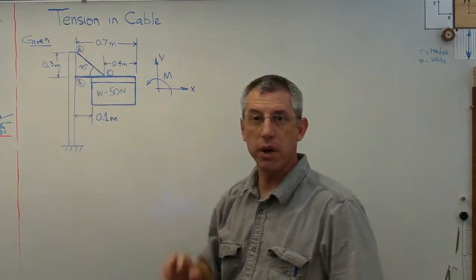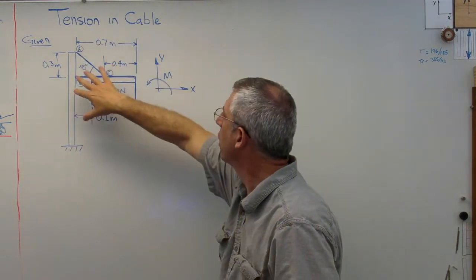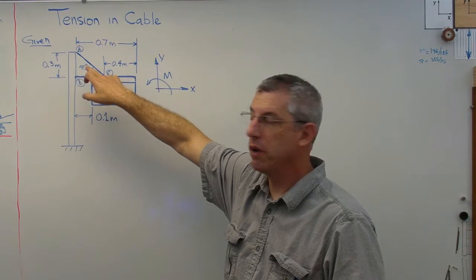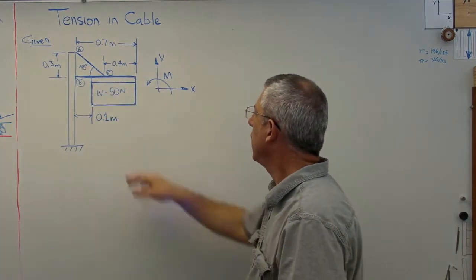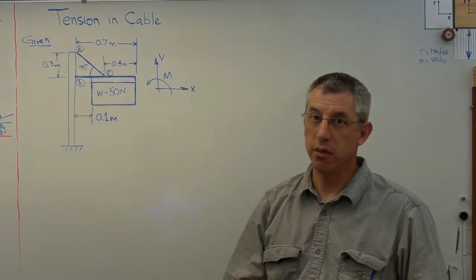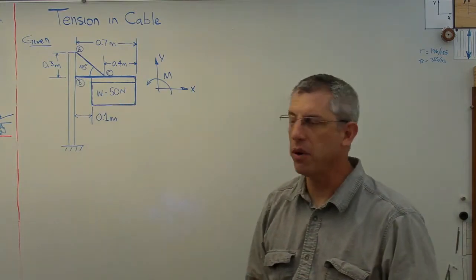And certainly this is something we can figure out using statics. So I've made up a little sign here, and I've given it some dimensions that the cable's at a 45-degree angle, and the weight of the sign is 50 newtons. So if you're a little uncomfortable with metric units, you should get comfortable with metric units. But if you want this in pounds, it's in the neighborhood of 10 or 11 pounds.